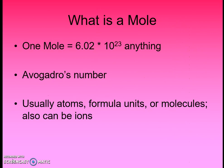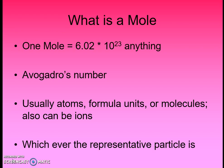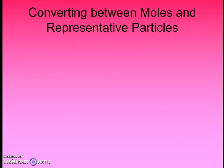Avogadro's number is going to be used mostly for really small particles — these representative particles — depending on what substance we're looking at. If it's an element, it's made up of only one type of atom, so we're talking about atoms. If it's an ionic compound, we're talking about formula units. If it's a molecule — nonmetals bonded together — then we're talking about molecules. It could also be ions when ionic compounds dissociate in solution, but we won't focus on ions too much. Since these are equivalent measurements, we can use them to convert between different sets of units.